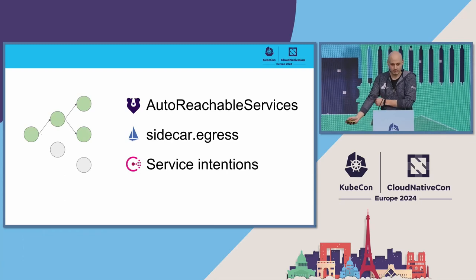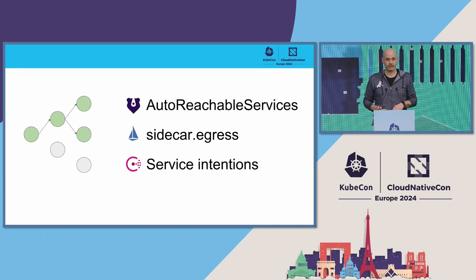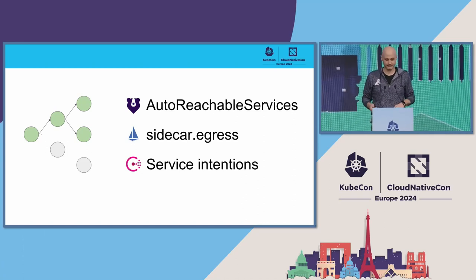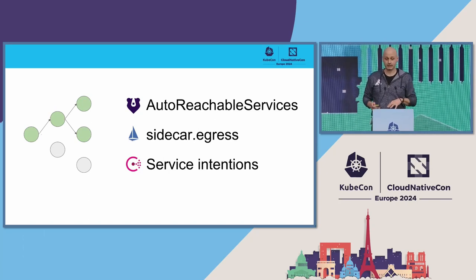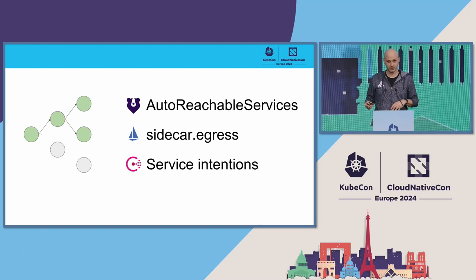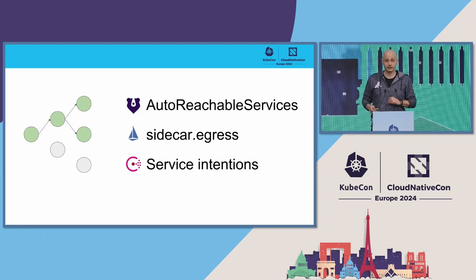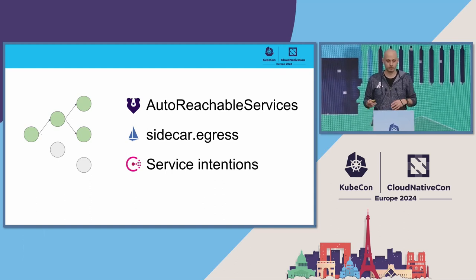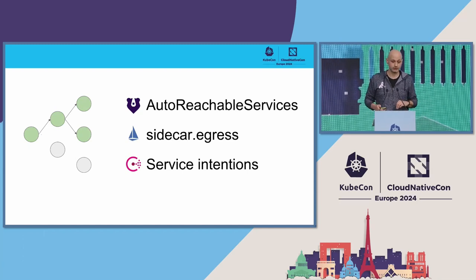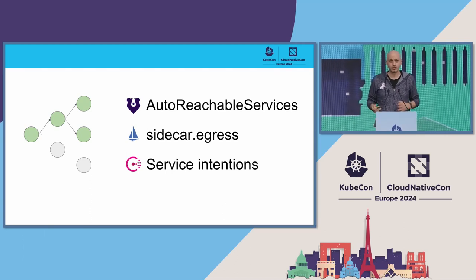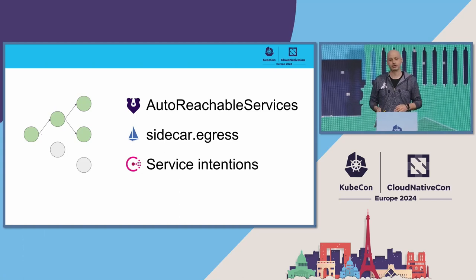So what can we do about this? Microservices usually just talk to a couple of their neighbors, so what we can do is only tell Envoy about those services. In Kuma, you can use the setting called auto reachable services, which combined with mesh traffic permissions — policies that tell which service can talk to which service — will trim the configuration and reduce resource usage. In Istio there is a setting called sidecar.egress that tells the sidecar which services it should consume, and in Consul there is a setting called service intentions, which is pretty much the same as in Kuma: you define who can talk to whom and the configuration will be trimmed.